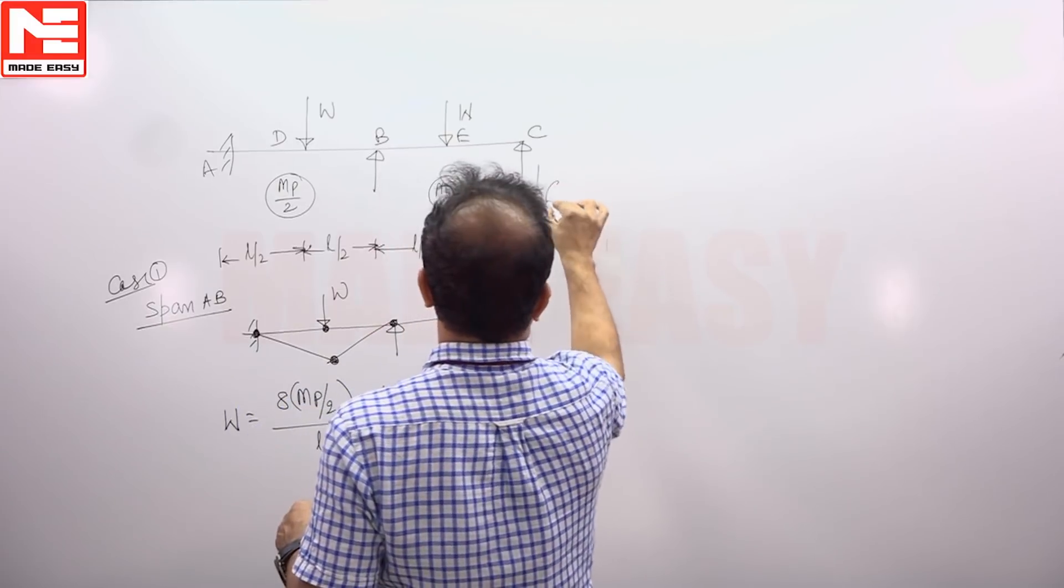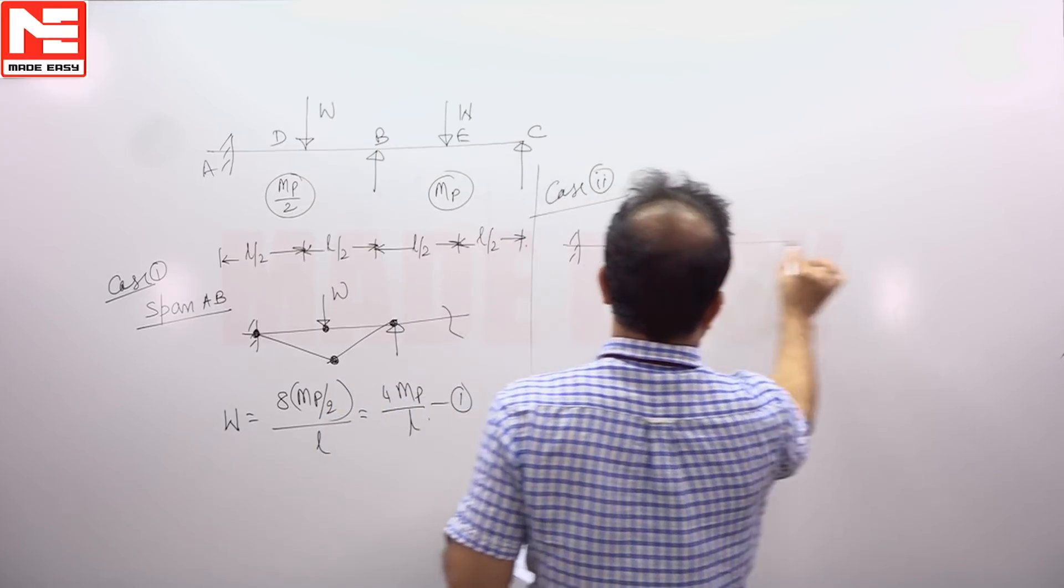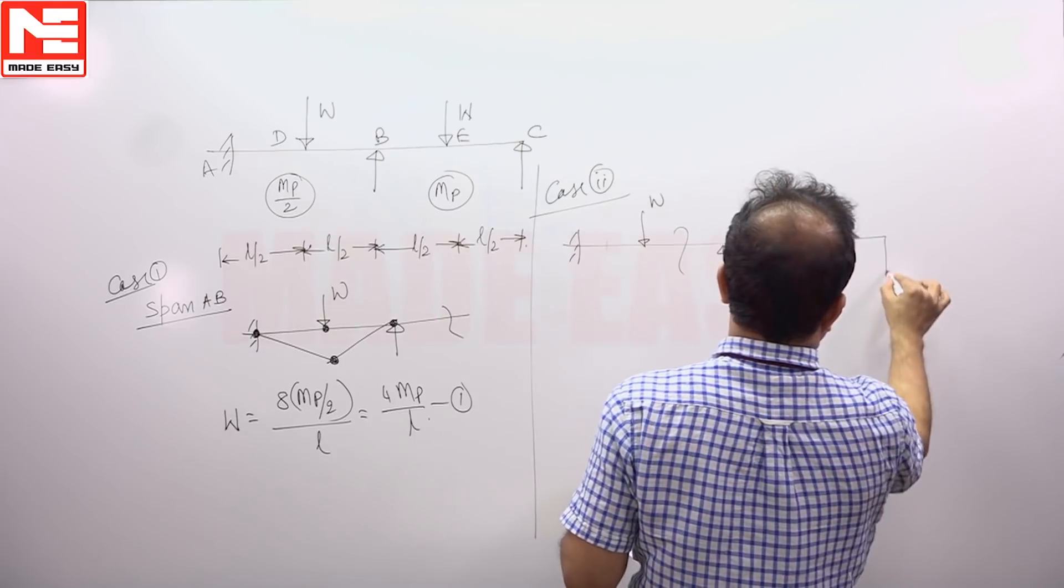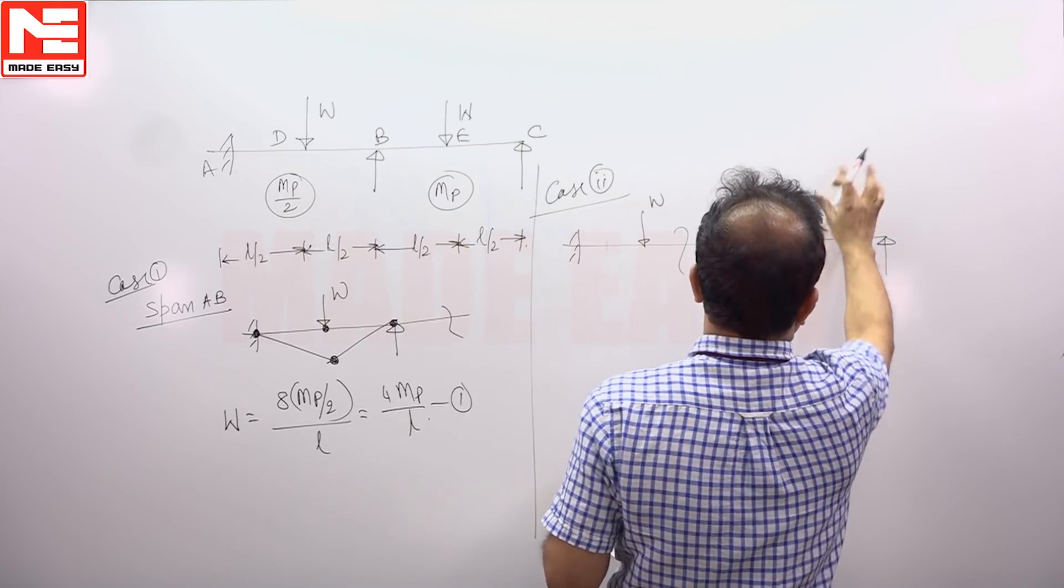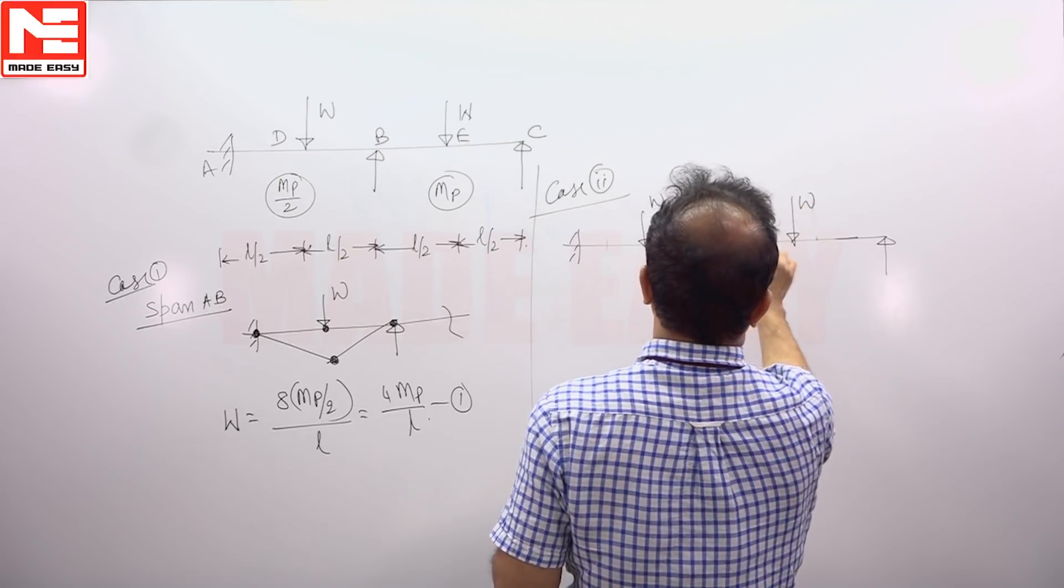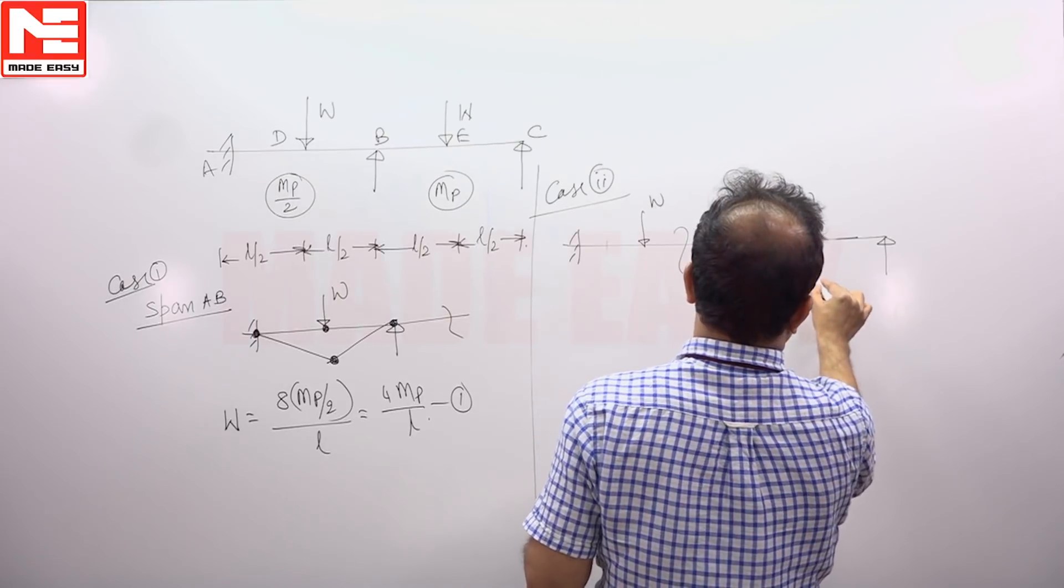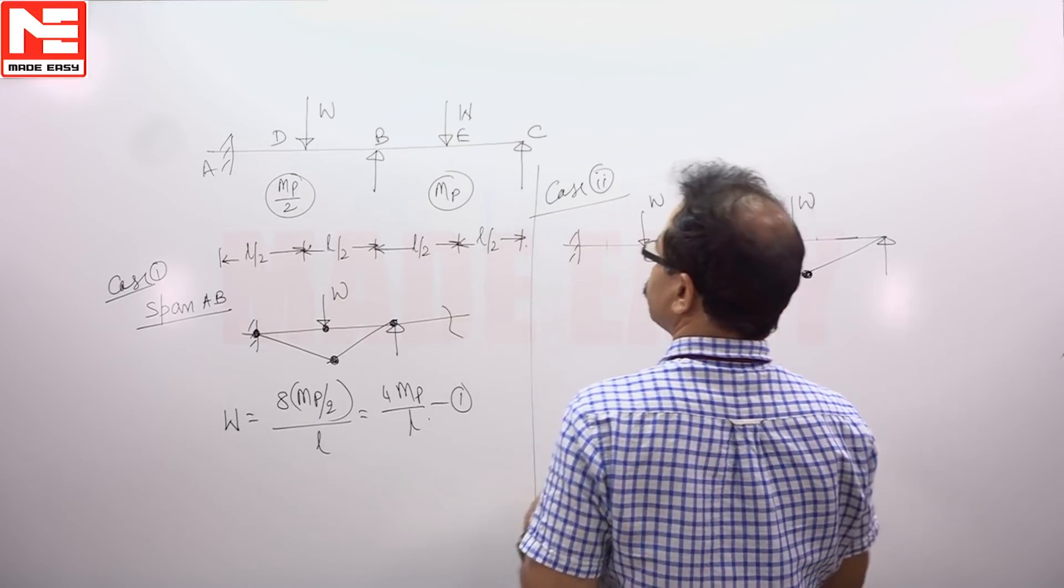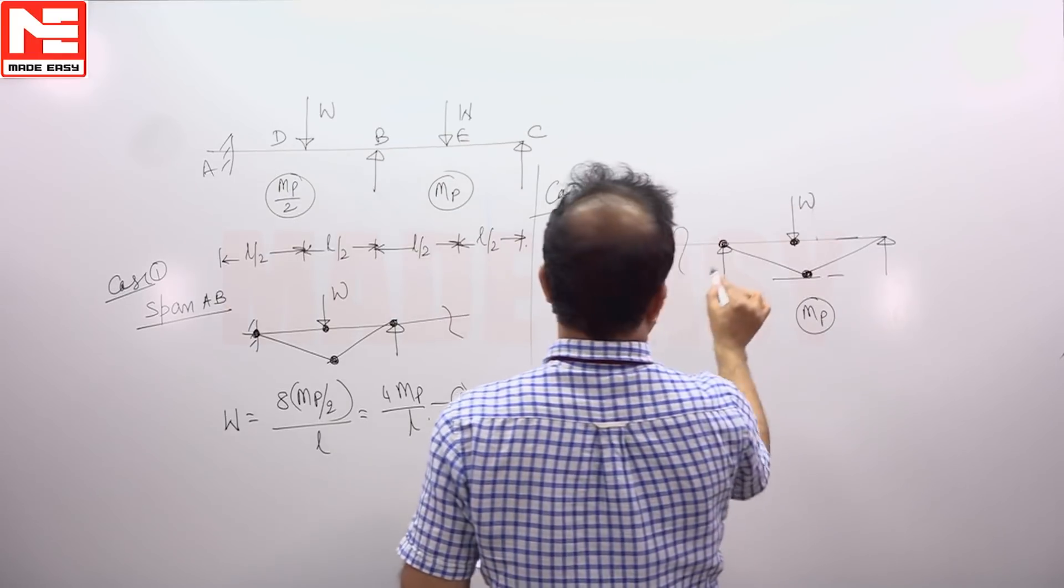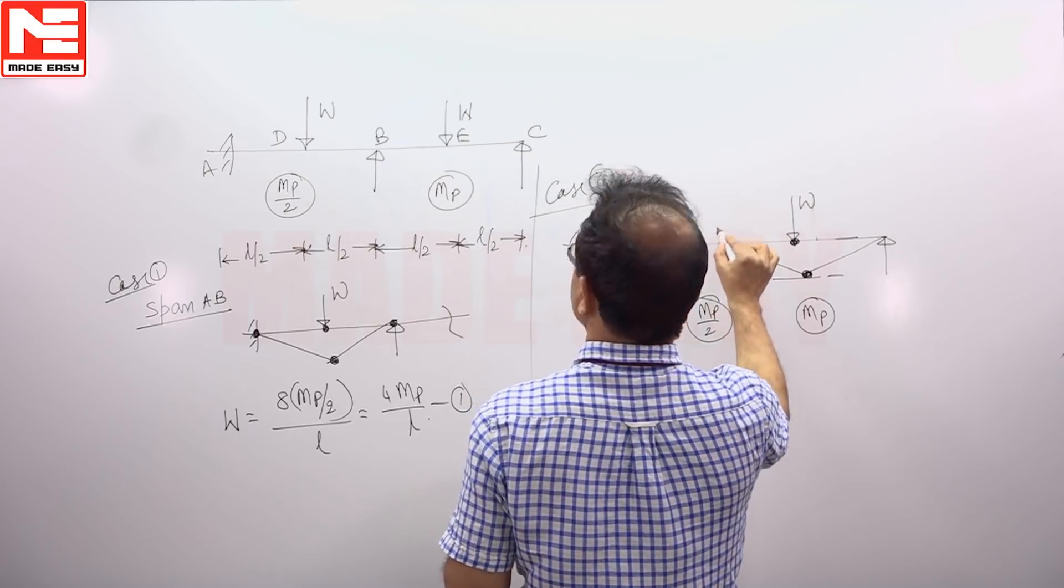Then case 2. If you take this loading, your central load is W. Here hinges will develop, here hinges will develop. This is the plastic moment capacity. Here plastic moment capacity is MP. Here already MP by 2 is there. Capacity is MP by 2.